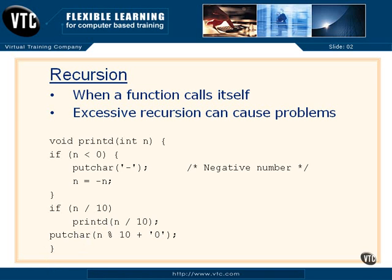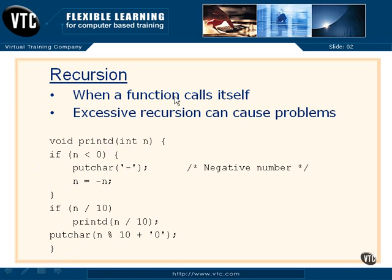For a number like 1234, we would have printed the 1, and now we print the 2. Then we exit, come back into the next statement after the call for 3, exit, the 4 will be printed, and finally we wind our way back out of this recursive set of steps and leave printd entirely. That is recursion — a function turning in on itself, calling itself repeatedly. Remember that you don't want excessive recursion, as it can blow the stack, but it's a very powerful part of C programming.